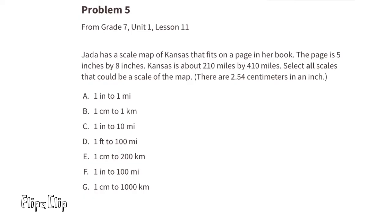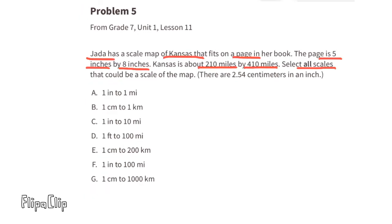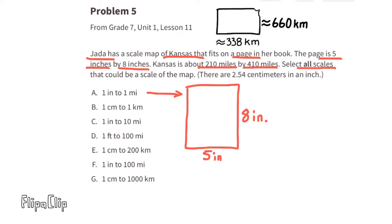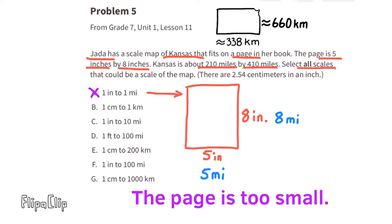Problem number five from seventh grade unit one, lesson 11: Jada has a scale map of Kansas that fits on a page in her book. The page is five inches by eight inches. Kansas is about 210 miles by 410 miles. Select all scales that could be a scale of the map. There are 2.54 centimeters in an inch. Scale a: one inch to one mile — the page could only fit five miles by eight miles, way too small. It would need to be 210 inches by 410 inches.